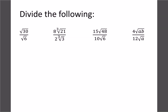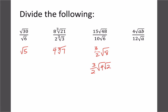Let's do a few quick examples. Root 30 over 6: 30 divided by 6 is 5, so we get root 5 — done. Cube root of 8 divided by 2 is 4; 21 divided by 3 is 7, so cube root of 7 — done. Next: 48 divided by 6 is 8. Then 15 divided by 5 doesn't divide evenly, so write it as a fraction — reduce to 3/2. But we can still simplify root 8 into 4 and 2, root 4 is 2, so 3/2 times 2 is just 3 — that's the final answer. Always try to simplify if you can.